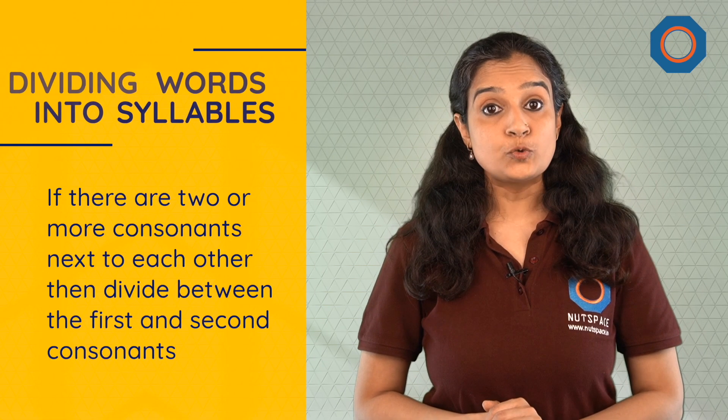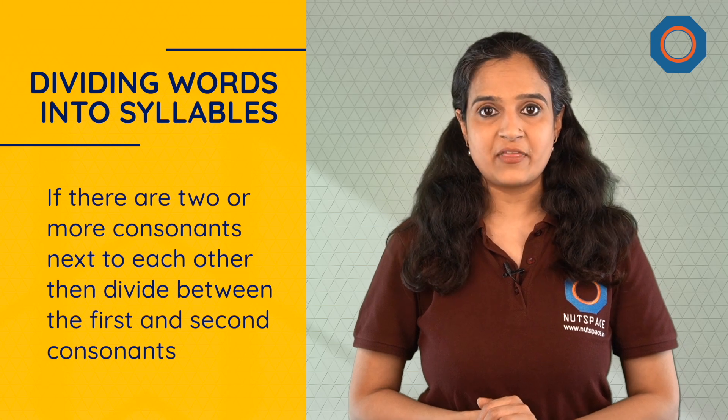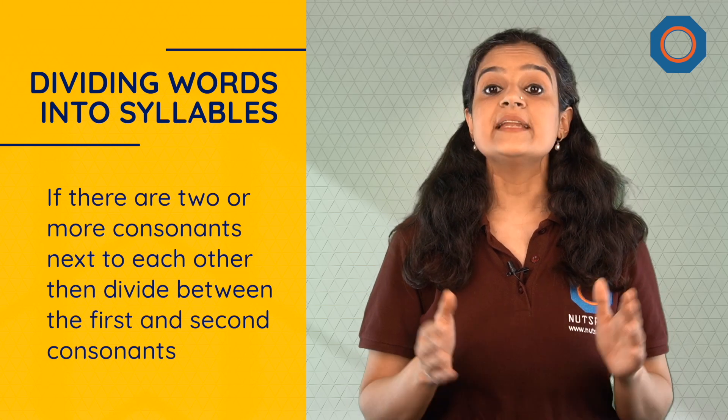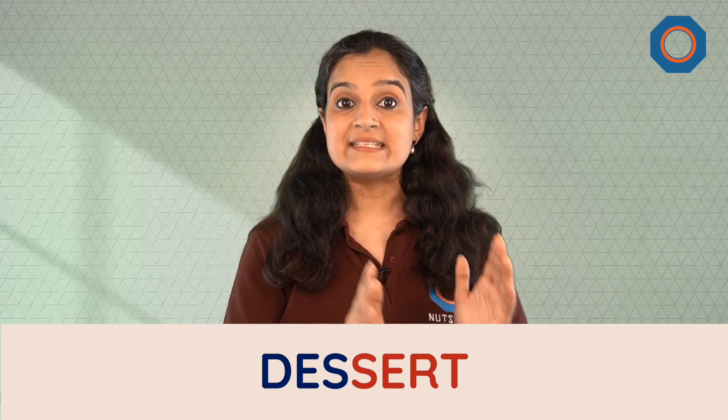If there are two or more consonants next to each other, then divide between the first and second consonants. Let's take a few examples: buffet, desert, object, pilgrim.